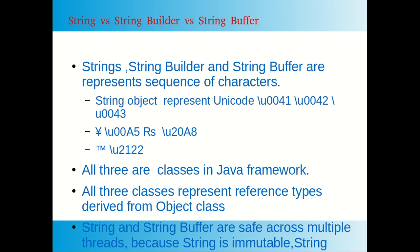Unicode has almost all characters represented internationally. All three classes — String, StringBuilder, and StringBuffer — are part of the Java framework, specifically the java.lang package, and all three are derived from the Object class.